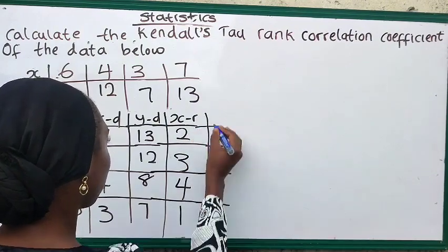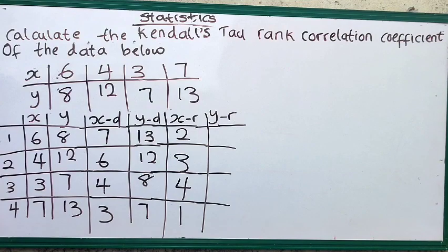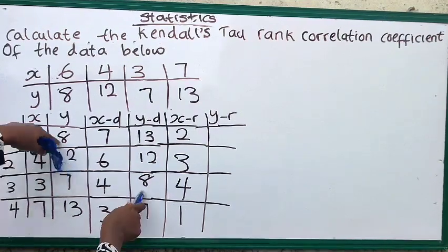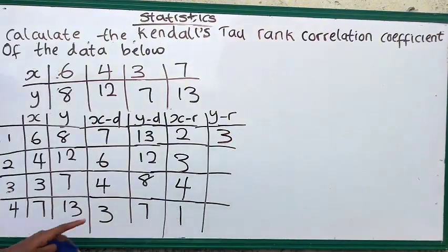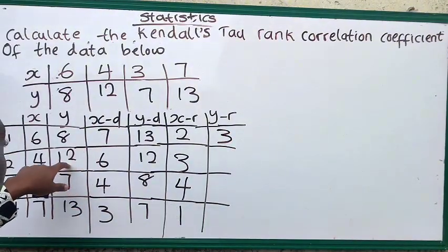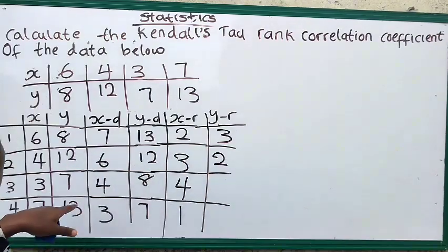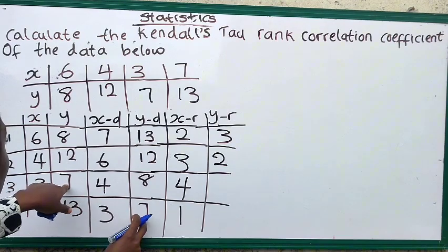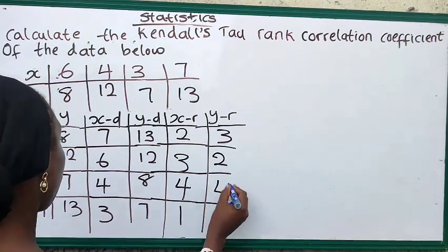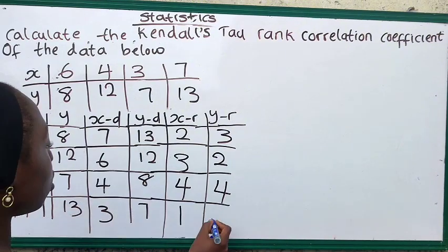After that, let's rank our y. The first one is 8. Where is 8 here? The rank of 8 is 3. The second one is 12, so rank of 12 is also 2. The third one is 7, the rank of 7 here in a descending order is 4. And the last one is 13, the rank of 13 is 1.